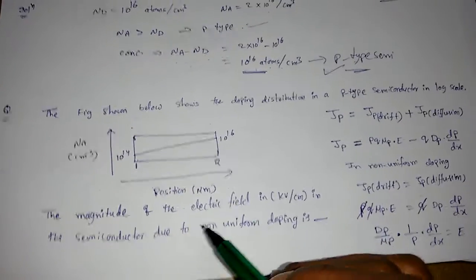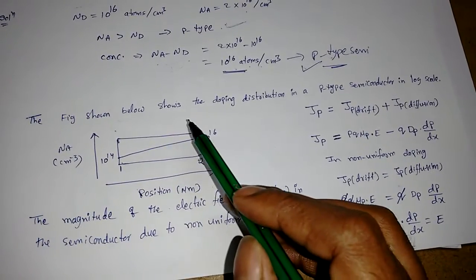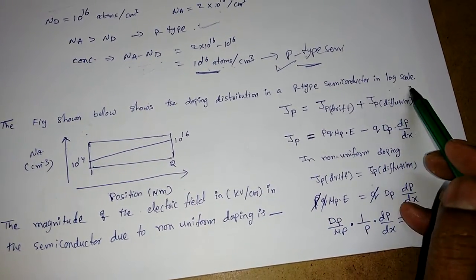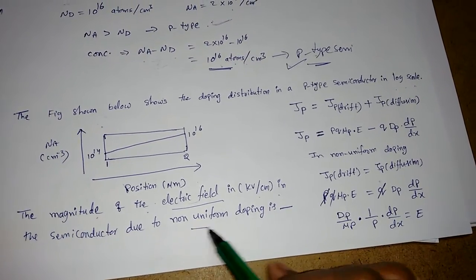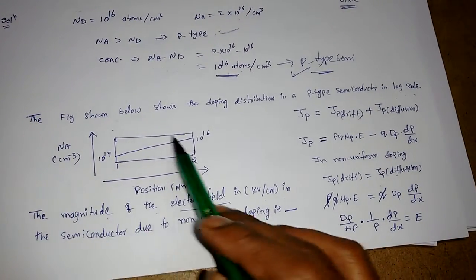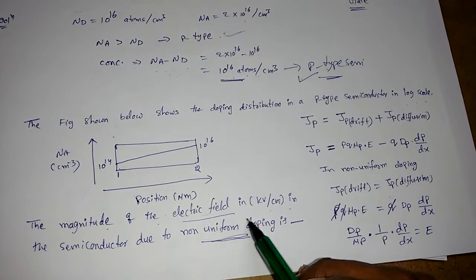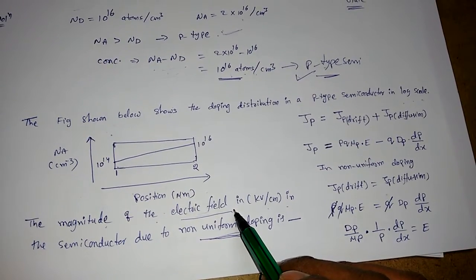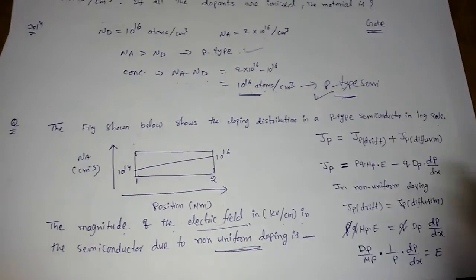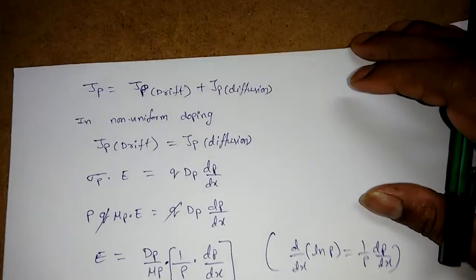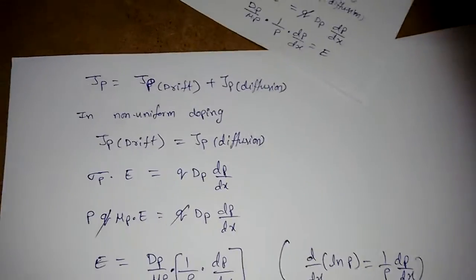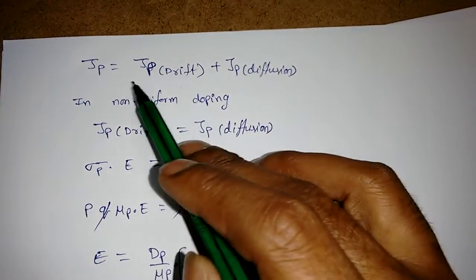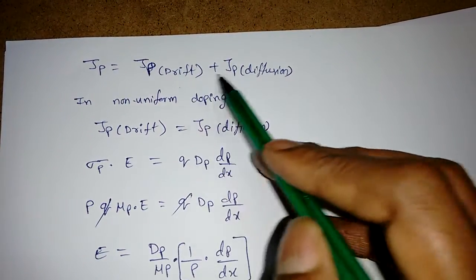The next problem involves drift and diffusion concepts together. The figure shows the doping distribution in a p-type semiconductor on a logarithmic scale. We need to find the magnitude of the electric field in kV/cm due to non-uniform doping. Since it's a p-type semiconductor with acceptor impurity concentration Na, we consider the total hole current density Jp, which includes both drift and diffusion.